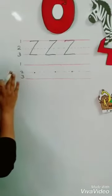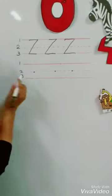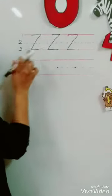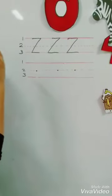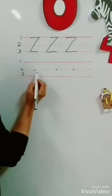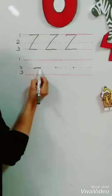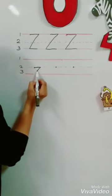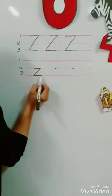Excellent. Now we will write the small z. I will write the small letter z, between line number two and three. We write it like the capital letter but small. From the dot here, dash on line number two, sloping line down.